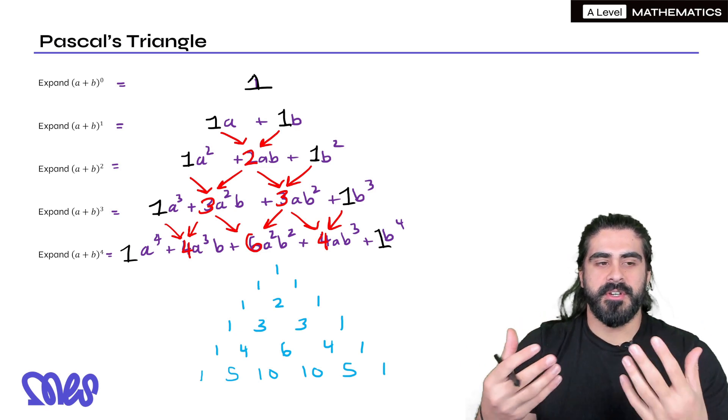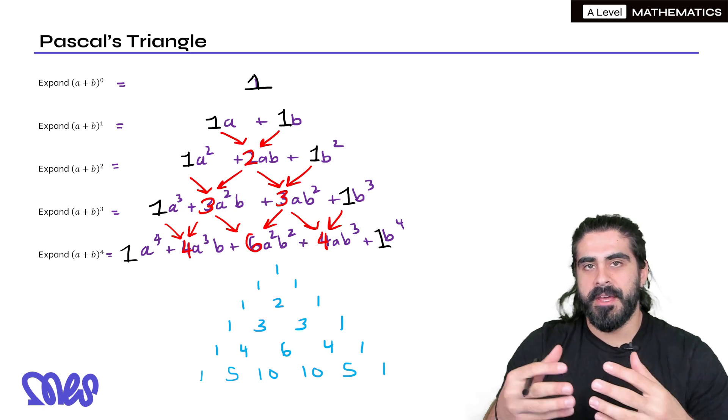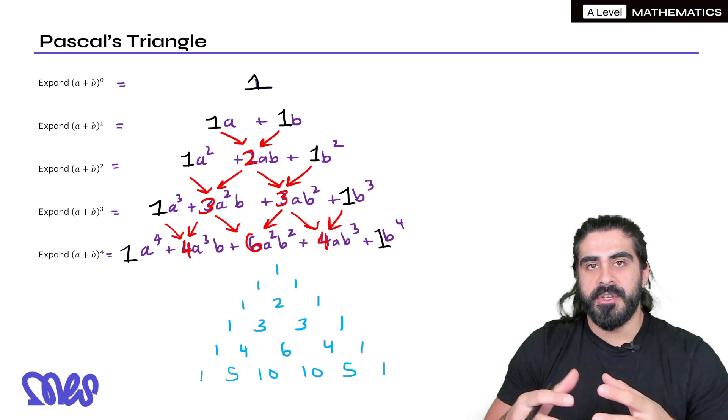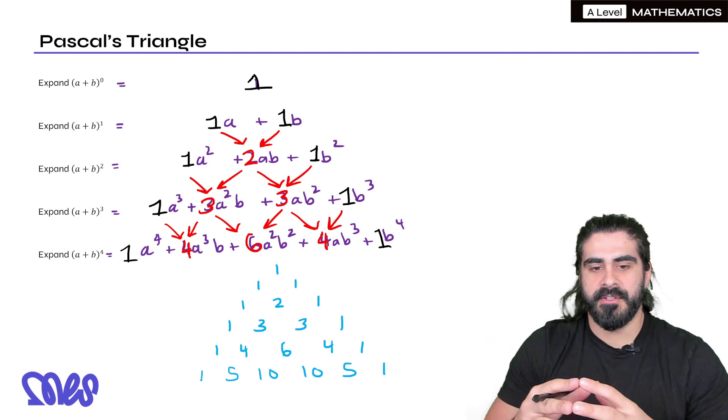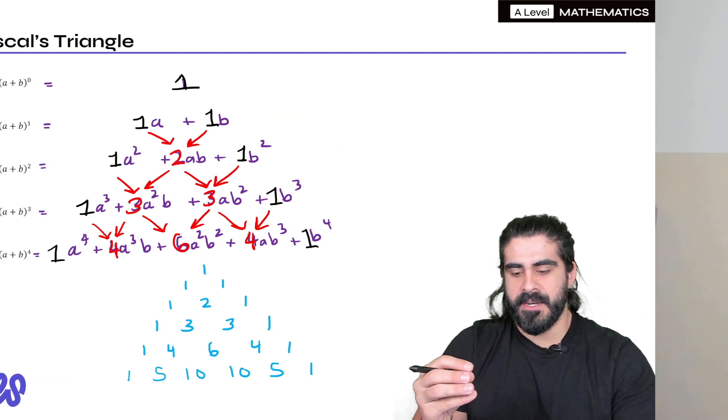Obviously you might be wondering okay well if we had power 20 then we would need the binomial expansion, we would need to know factorial notation which we'll do next lesson. I'm going to keep it simple for now.